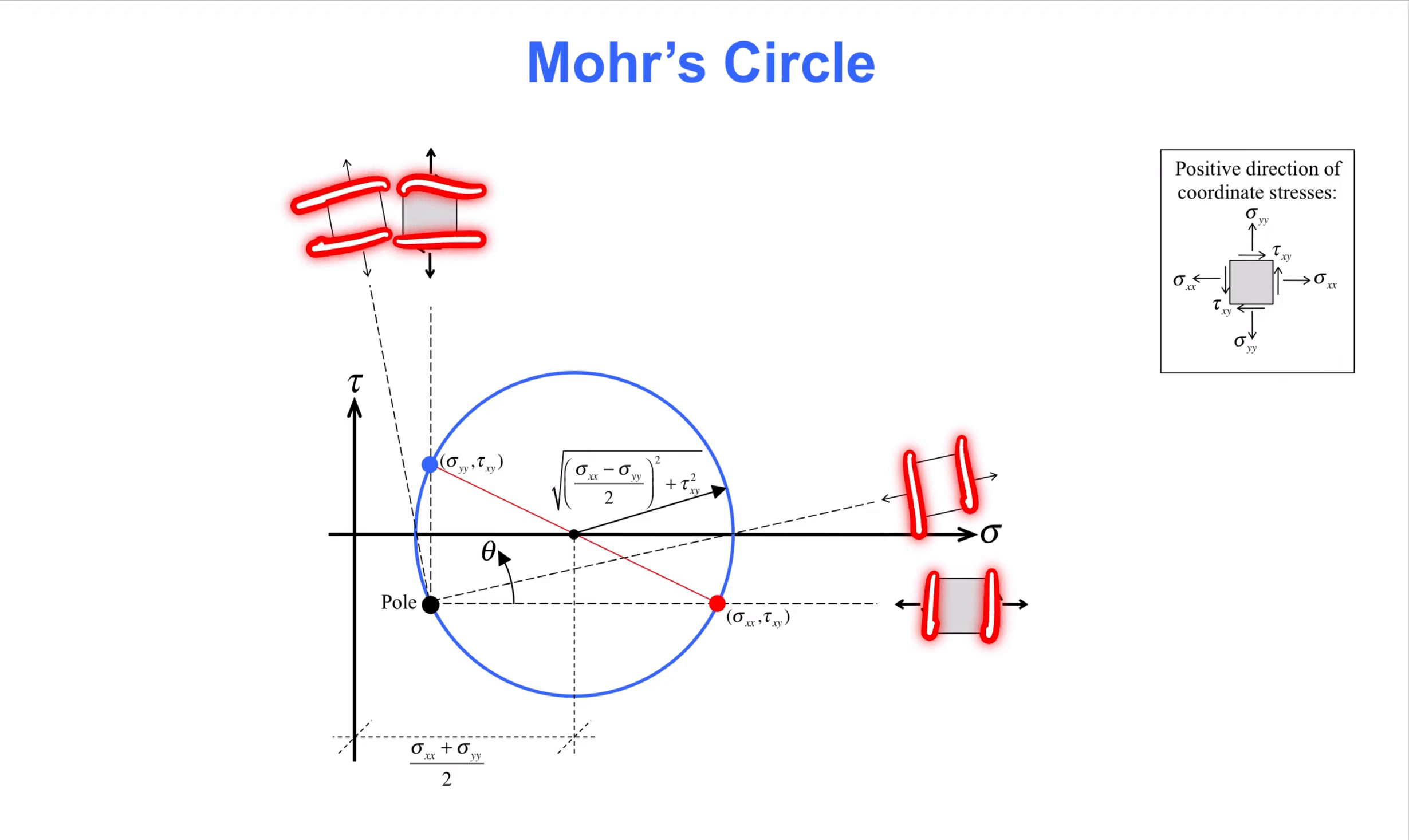If the intersection point is on the positive part of the sigma axis then the axial stress on the near and far edges is tension. If the point on the circle is on the positive part of the tau axis then the shear stress on the near and far edges twists the square clockwise. That means positive shear stress, as you see in the insert on the right hand side of this slide.